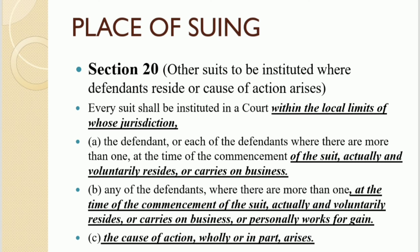Simply put, the sections we have studied from 15 to 20: in section 15, every suit shall be instituted in the lowest grade court. From sections 16 to 20, two things were covered: if a case is related to immovable property, it will be instituted where the immovable property is situated. For movable property or compensation for wrong or personal wrong, the case will be instituted in three places — first, where the cause of action arose; second, where the defendant resides; and third, where the defendant is doing business. These three things are explained in these sections.